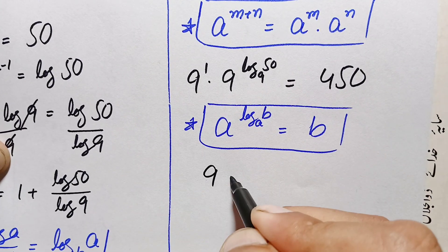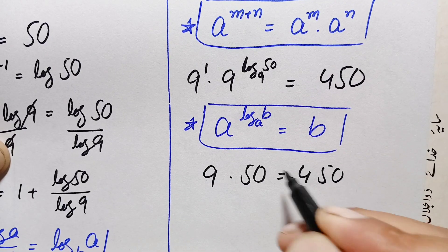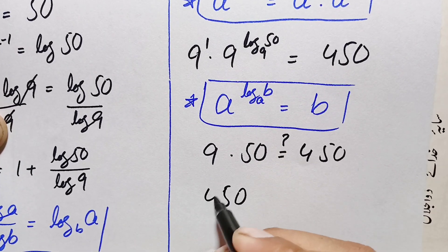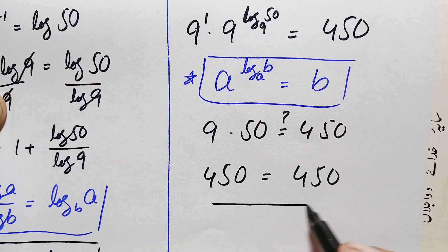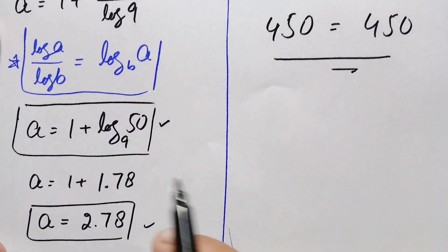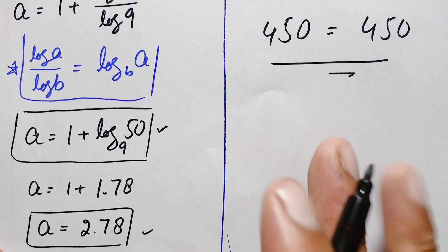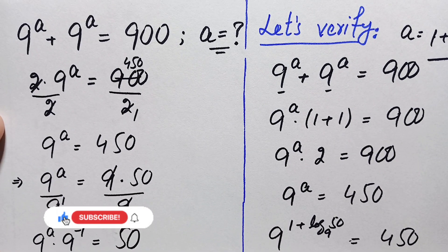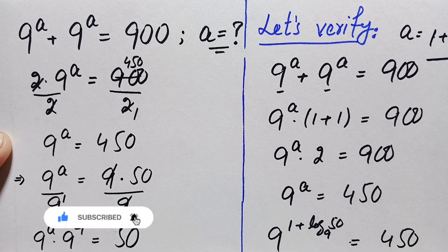The left hand side becomes 9 times 50, which equals 450. Since both sides equal 450, this confirms that a = 1 + log_9(50), approximately 2.78, is the exact and correct value of a. Don't forget to subscribe to the YouTube channel for more interesting step-by-step solutions. Thanks for watching.